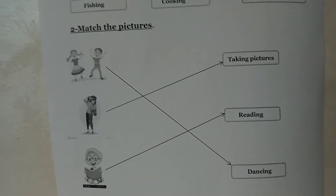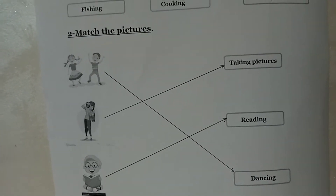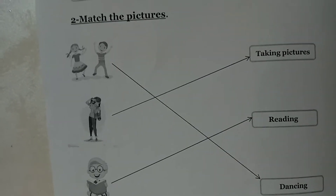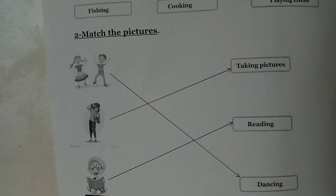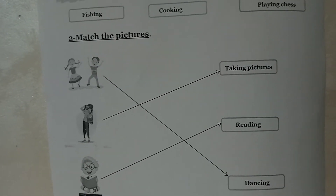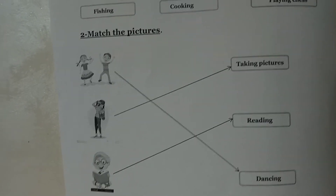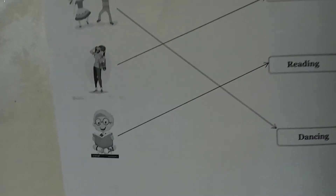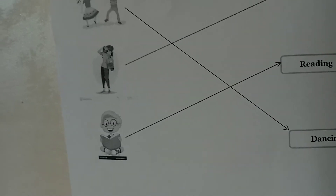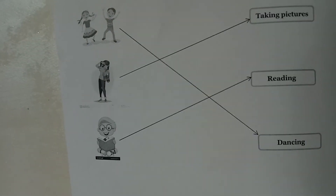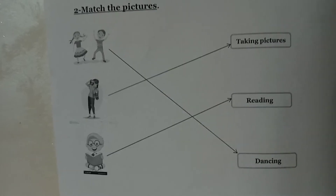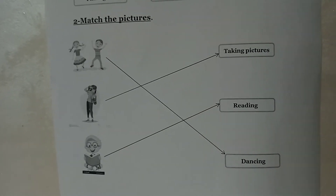Picture number two — yes, she is holding what? She is holding a camera, so she is taking pictures. Very good. Number three, look, what is he doing? Yes, he is holding a book, so he is reading.